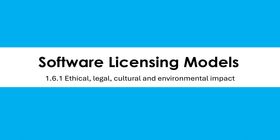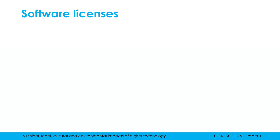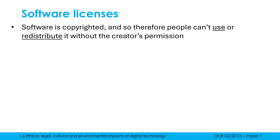Hello, let's go ahead and cover the last topic in Paper One, which is a very glamorous one, all about software licenses. To understand the purpose of a software license, we need to remember that the Copyright Designs and Patents Act gives software automatic copyright. Because of this law, copyright means people can't use or redistribute it without the creator's permission.